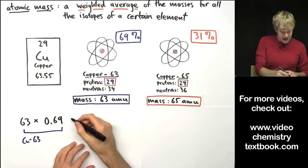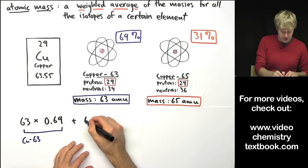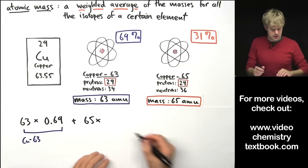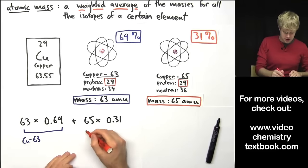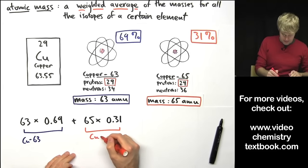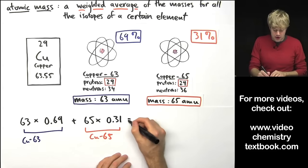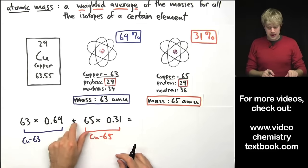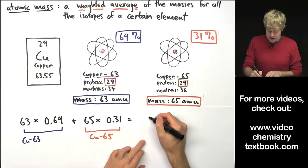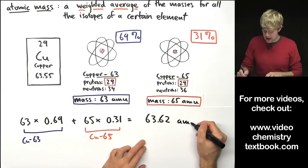Now I'm going to add that to copper-65. I'm going to do 65 AMU times its abundance 0.31 expressed as a decimal. Just to keep track of this, I'll put copper-65 here. Now the math really isn't that hard. It's just setting it up that's tricky. You multiply this, multiply this, add them together, and I'm going to get 63.62 AMU.